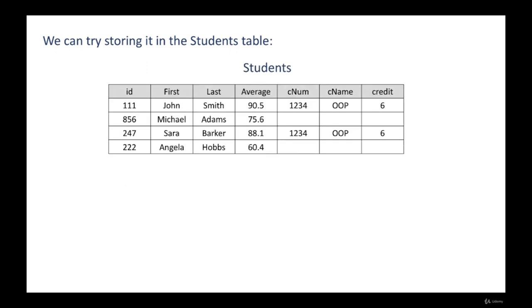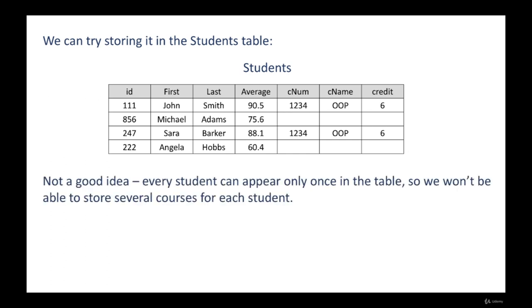The first attempt is to try storing this data in the students table — we enlarge the students table and add properties for the course. We can see that in the row for John Smith we have properties of the courses he took. But this is not a very good idea: every student can appear only once in the table, so we won't be able to store several courses for each student. John Smith took the database course too, but in this table we cannot indicate this fact because John Smith appears only once.